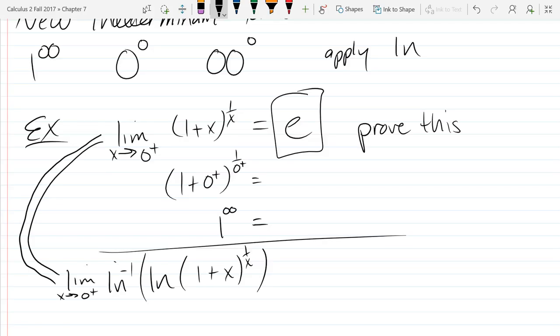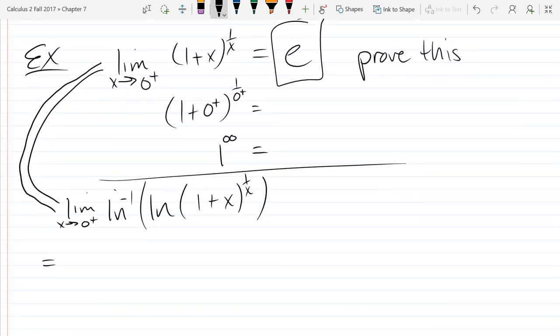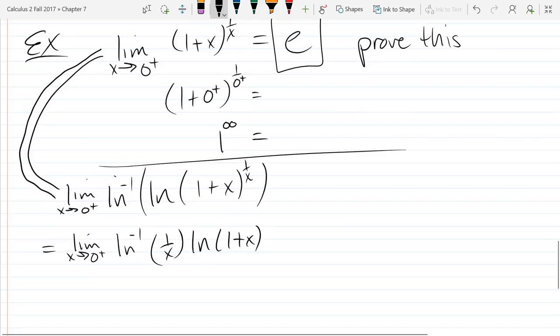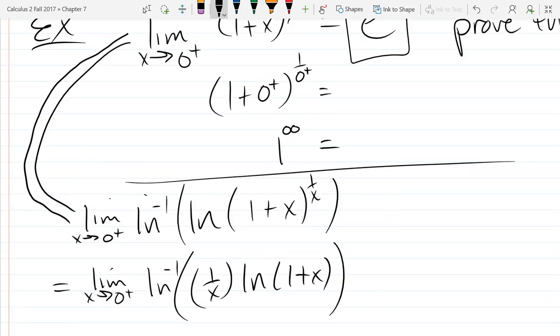So I applied a natural log inverse of natural log. So that doesn't change anything. Now the motivation is, it lets me bring this exponent down as product. That was the reason we did that. So let's go ahead and do that algebra. So we're going to get a 1 over x times ln 1 plus x. So that was our motivation, was to get that form. So we at least don't have an exponent anymore. And now what I'm going to do is pass the limit through ln inverse function. So it's a continuous function, so I can pass the limit through.